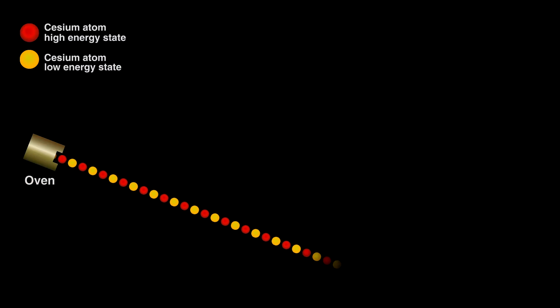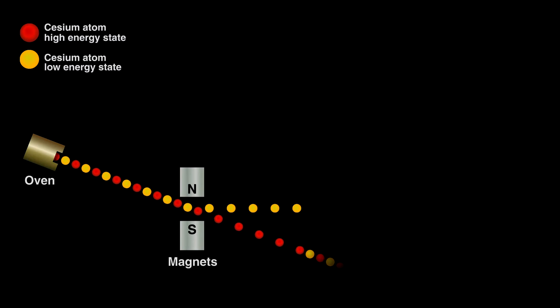In an oven, we heat cesium chloride to create a gaseous stream of cesium ions. The stream contains both the low and high energy ions. We first flow it through a magnet, separating the two types, discarding the high energy ones, allowing the lower energy ions to pass into a chamber.